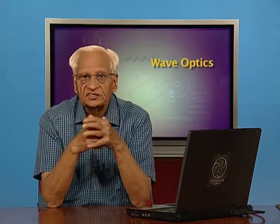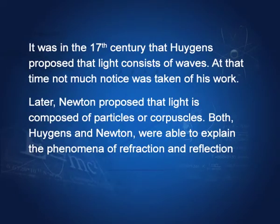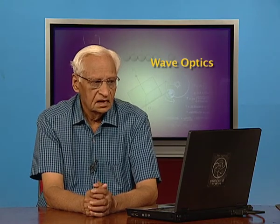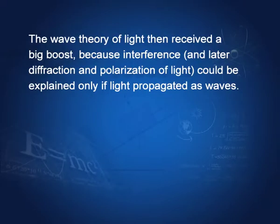To go back into some history, it was in the 17th century that Huygens proposed that light consists of waves. Later, Newton proposed that light is composed of particles or corpuscles. Both Huygens and Newton were able to explain the phenomena of reflection and refraction. However, when in the early years of the 19th century, interference of light was discovered — which could not be explained on the basis of the ray nature of light — then Huygens' work was recalled. The wave theory of light received a big boost because interference, and later diffraction and polarization of light, could be explained only if light propagated as waves.